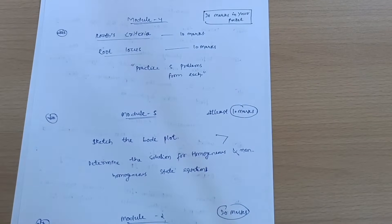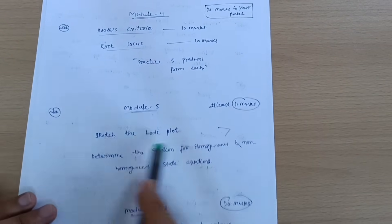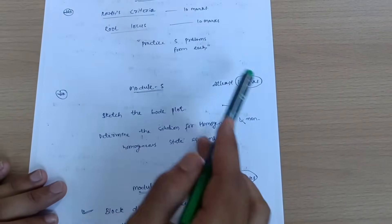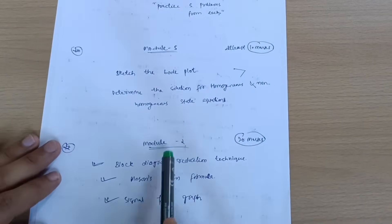You can go through these important notes which I will share later on. This is all about Module 5. Go through this much Bode plot, at least you will get 10 marks. So 20 from here, 10 from here, that is 30.